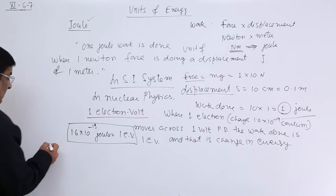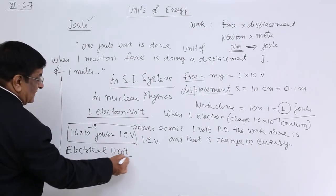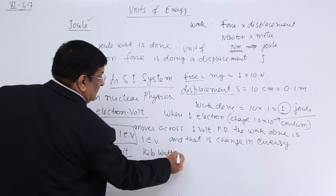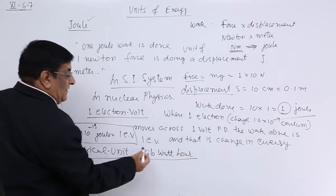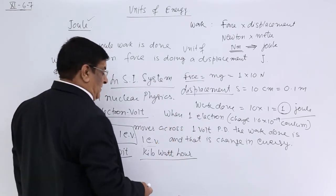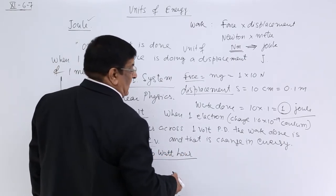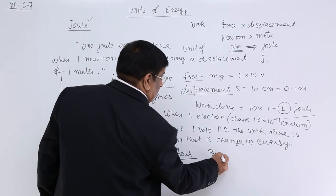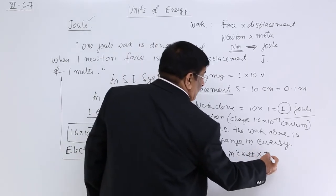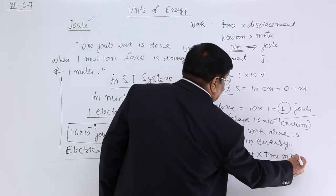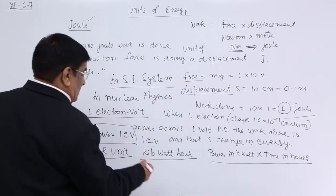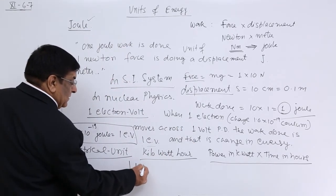So I will call it electrical unit. Electrical unit of energy, that is 1 kilowatt hour. We have to multiply the power multiplied by time. We will come to that power chapter in the next lecture. But this is how it is done. Power in kilowatt multiplied by time in hour gives the kilowatt hour.